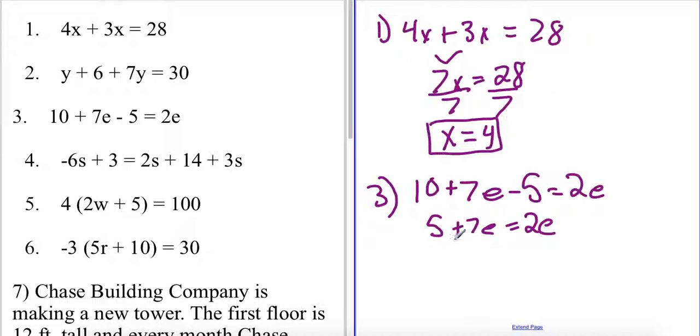Now what I want to do here is again I want to make sure that I have my constants and my coefficients on opposite sides. So I'm actually going to subtract by 7e on both sides. So my coins or my constants will be on the left, my coefficients will be on the right, so I'm going to have 5 equaling negative 5e.